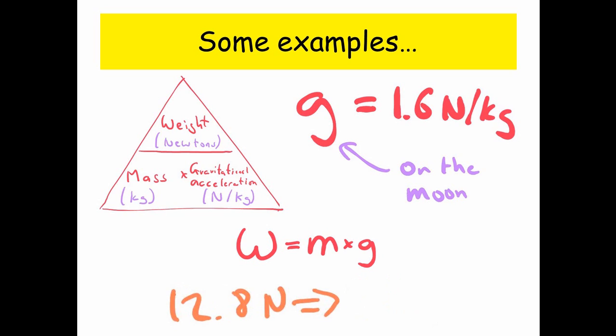So 12.8 newtons, well, 12.8 which is our weight, divided by gravitational acceleration which is 1.6, well that gives us 8 kilograms.